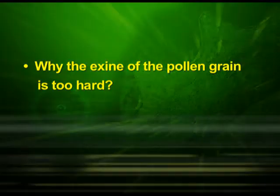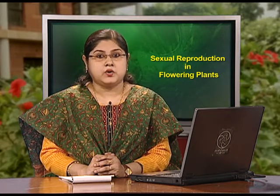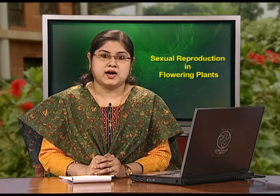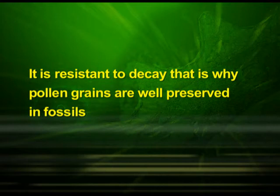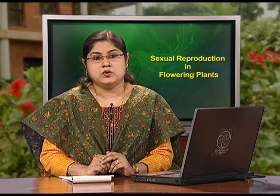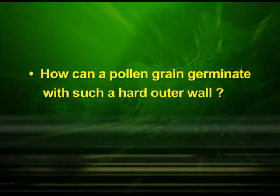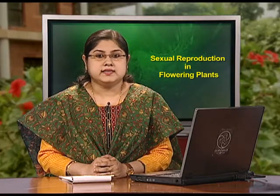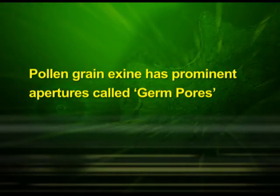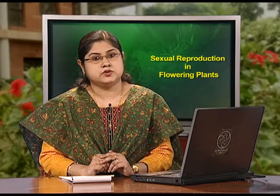The first point was: why is the exine of the pollen grain so hard? The exine, which is the outermost layer of the pollen grains, is made up of a complex substance called sporopollenin. This substance is one of the hardest materials known to human beings. It is resistant to decay, which is why pollen grains are well preserved in fossils. No enzyme that can degrade sporopollenin is known to us. A pollen grain can still germinate because its exine has prominent apertures called germ pores, where sporopollenin is absent, and germination takes place through these germ pores.